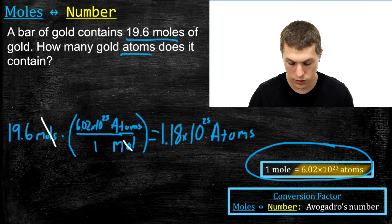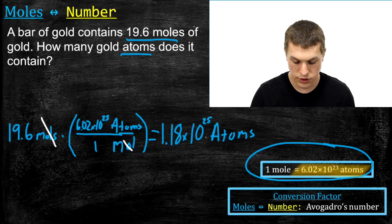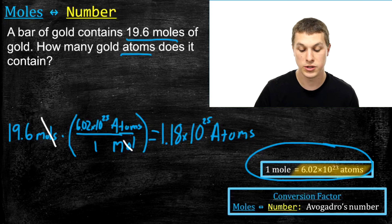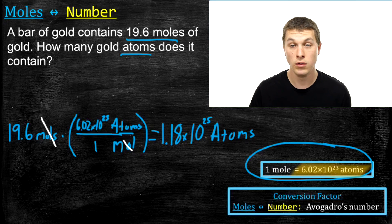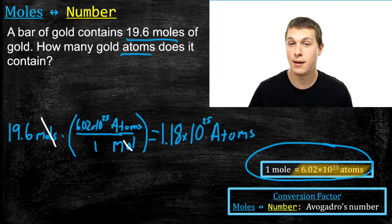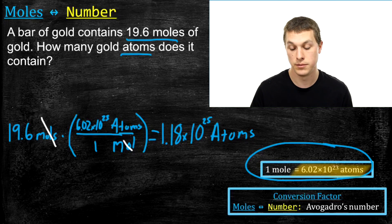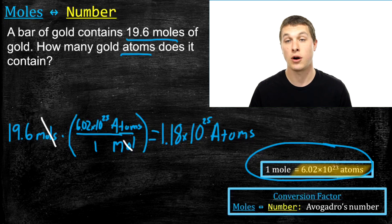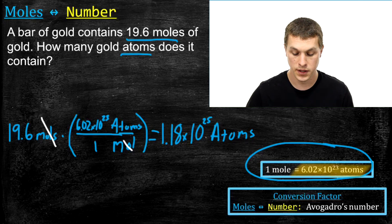So a very large pile of atoms. You can see why we need a number as large as the mole — 6.02 times 10 to the 23rd — to count atoms, because everyday objects have huge numbers of atoms in them. Now let's go the other direction: start with atoms and go to moles.